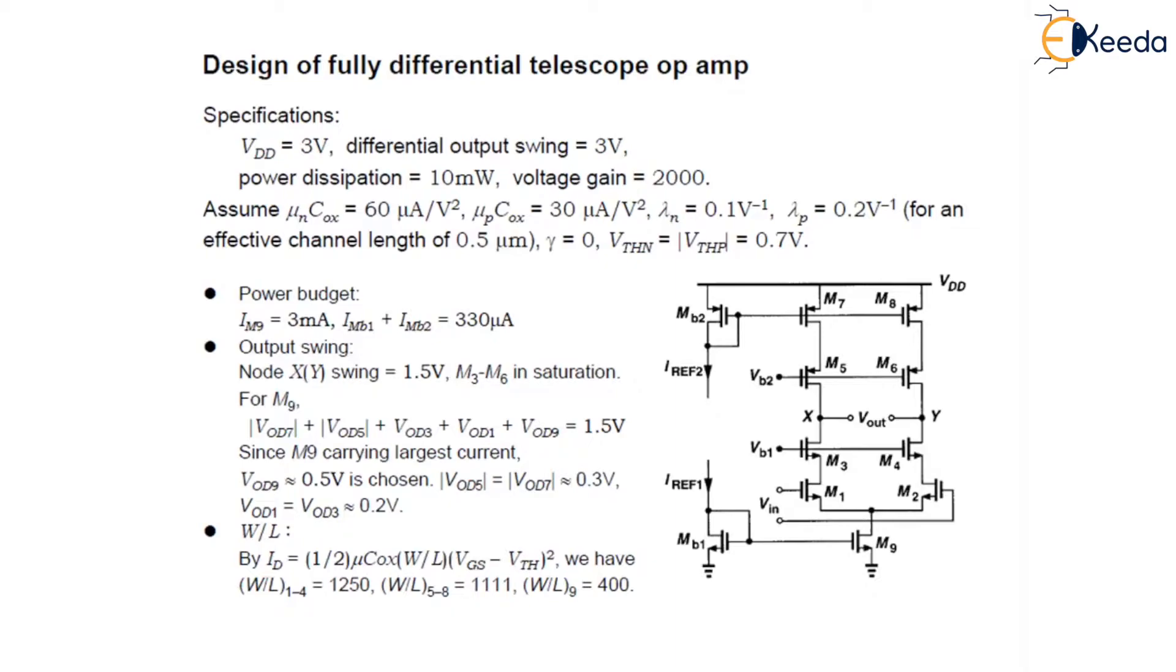Lambda n and lambda p is 0.1 per volt and 0.2 per volt respectively. For an effective channel length of 0.5 micrometers, gamma is 0, VTHn and VTHp is given as 0.7 volts.